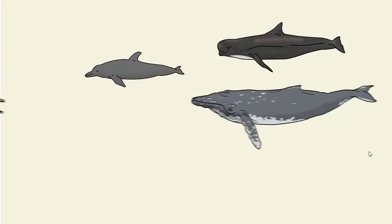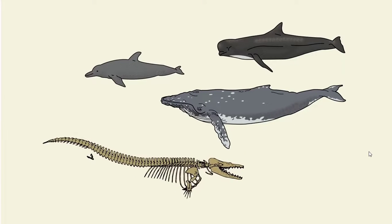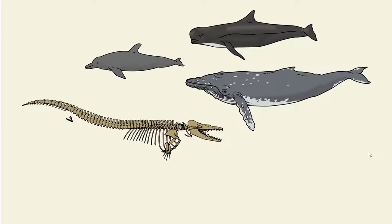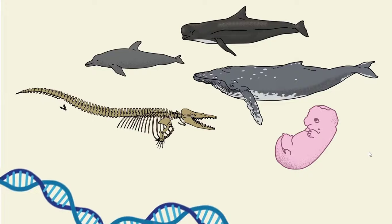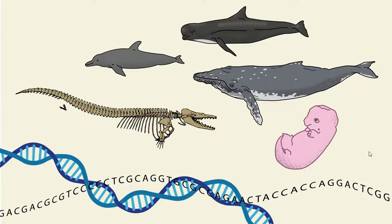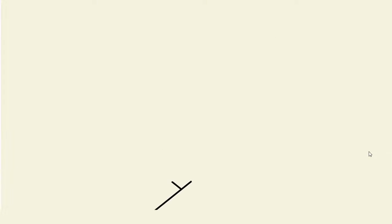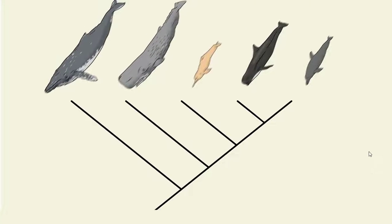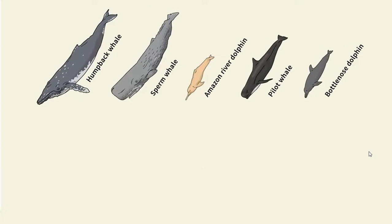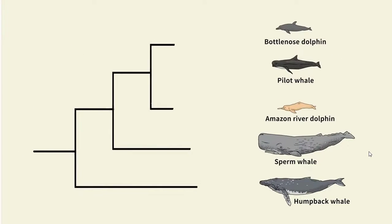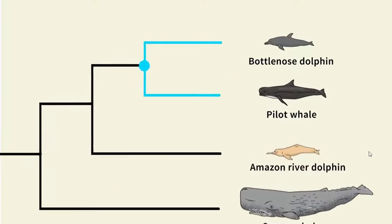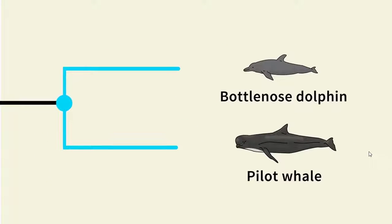Scientists use characteristics from anatomy and fossils to organize real organisms, too. They also use other lines of evidence, including how organisms develop as embryos, and DNA and amino acid sequences. Tree diagrams can be drawn in many different ways, but no matter how they're drawn, they follow the same rules of organization. In general, organisms that have more characteristics in common share a more recent common ancestor.